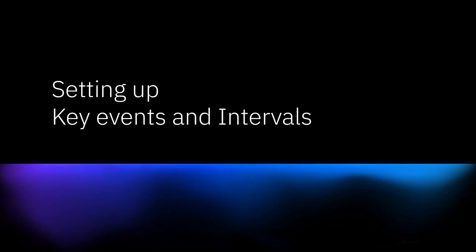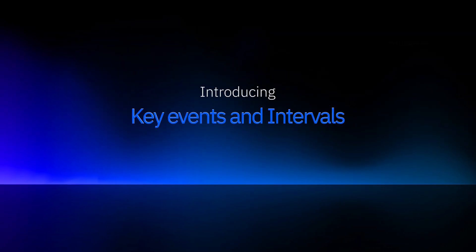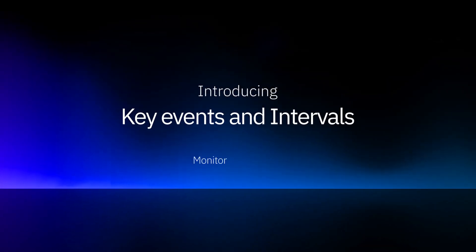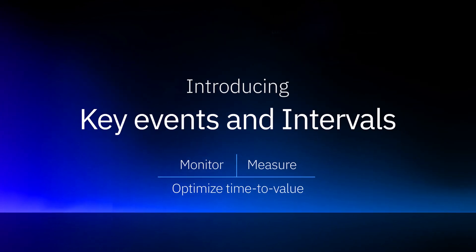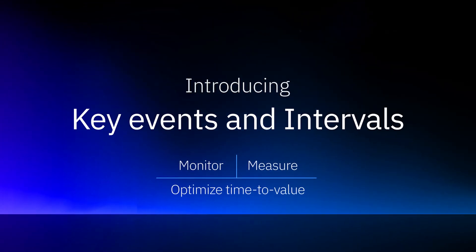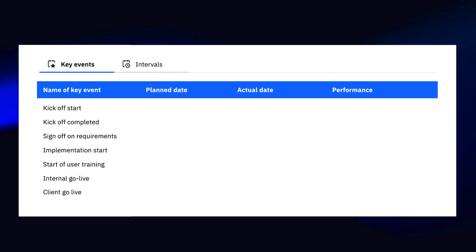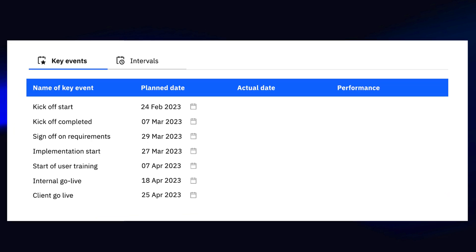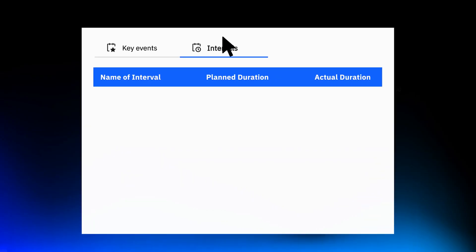In this video we will learn how to set up key events and intervals for measuring your project performance. Rocketlane introduces key events and intervals to provide a clear and logic-loaded understanding of areas in your projects where you spend more than the estimated time. These key events capture the start and end date of your project's tasks, phases, and milestones, and flag any delay in starting or completing important milestones.